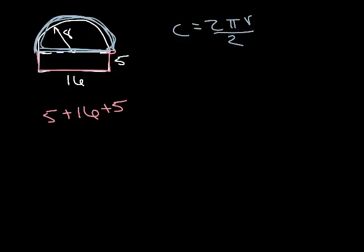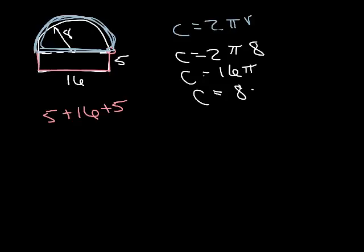So, we could do that. But, let's go ahead and just leave it as 2 pi r. And then, when we're done, we'll just take half of it. All right, so, c equals 2 times pi times our radius, which is 8. Or, c equals 16 pi. Now, if we took half of that, it would be c equals 8 pi.